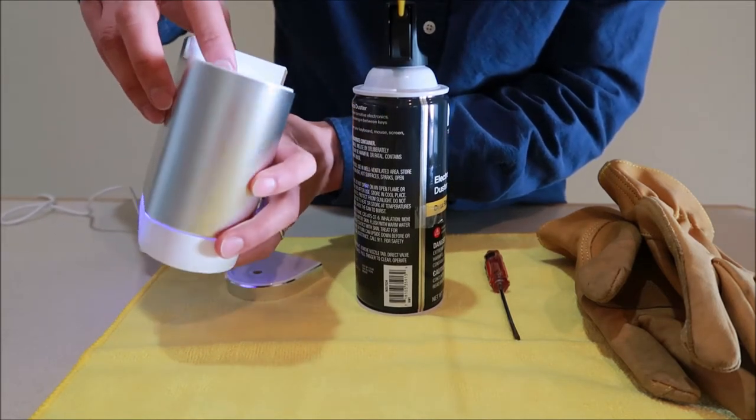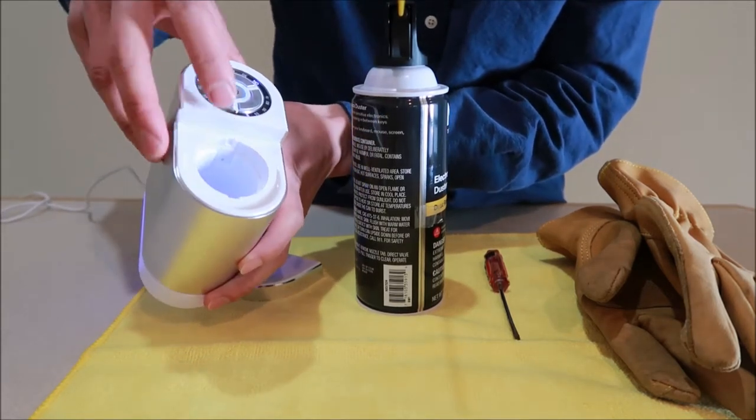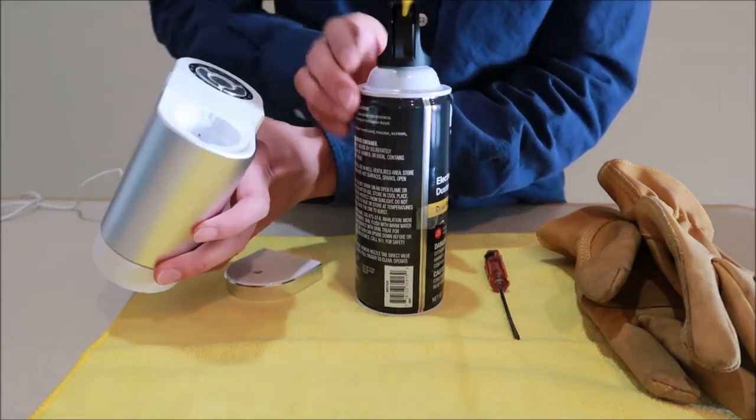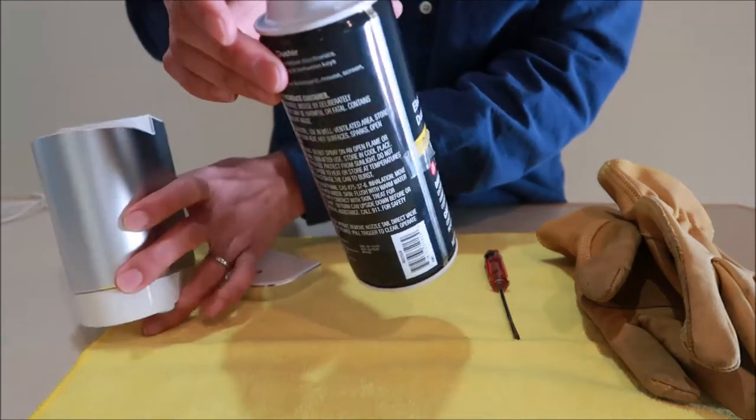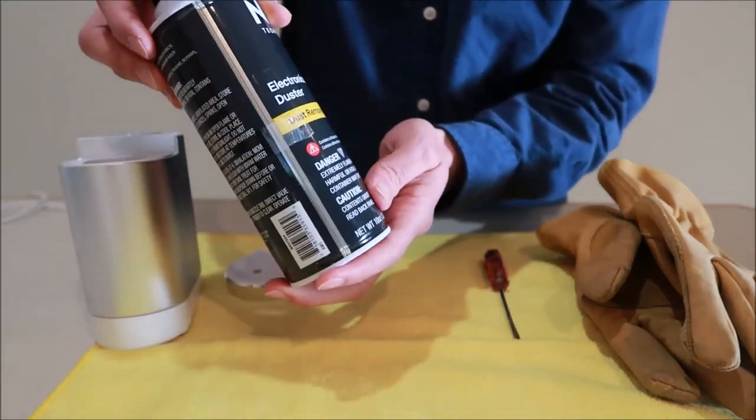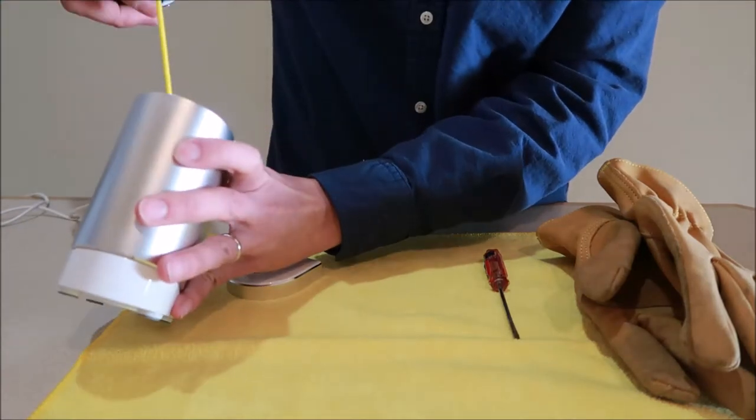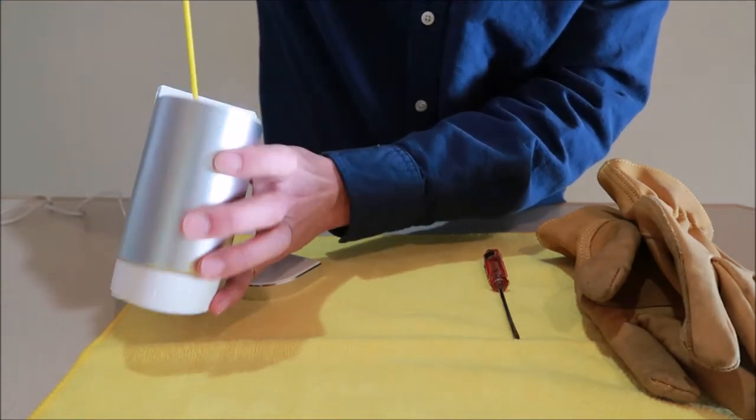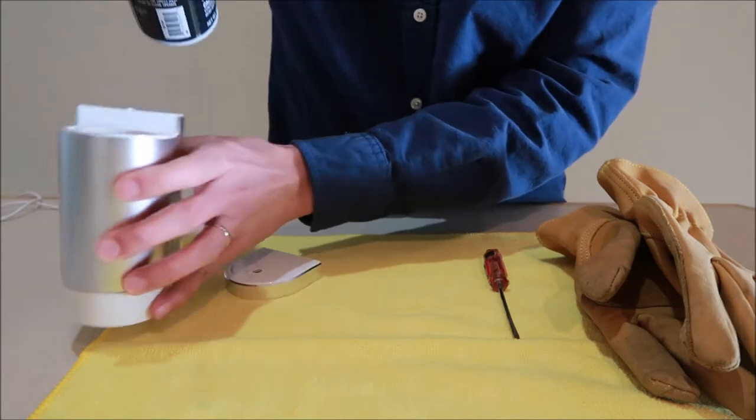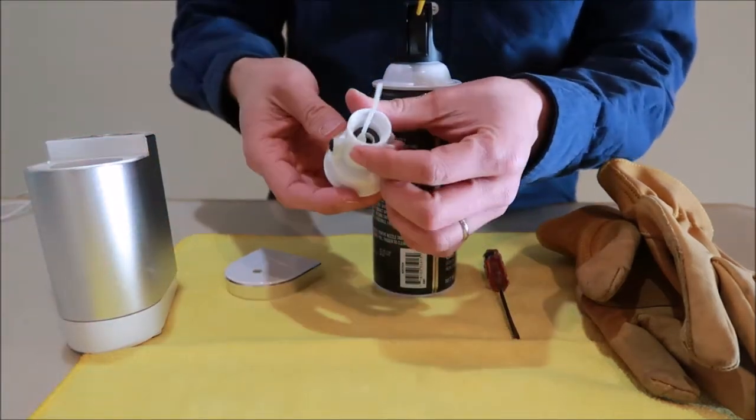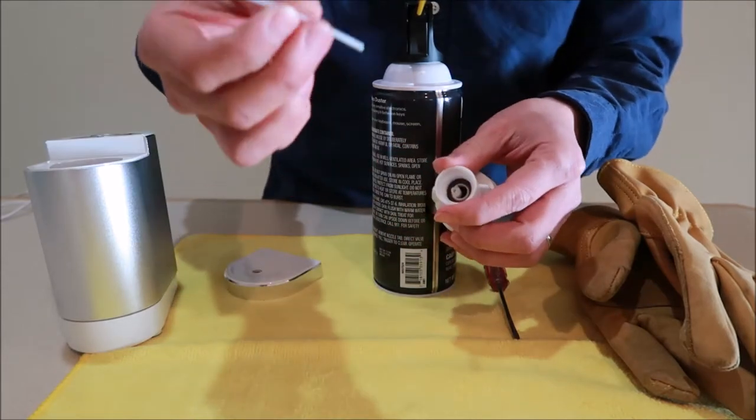What you can do is if you get an electronic duster, you can blow air into the hole where the air comes out. The other place is the straw.